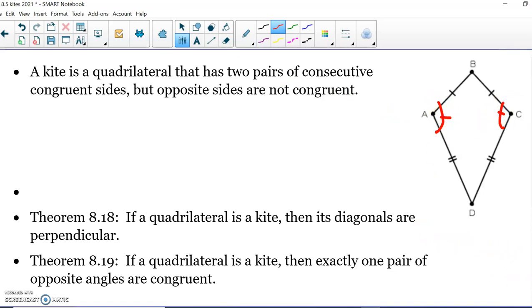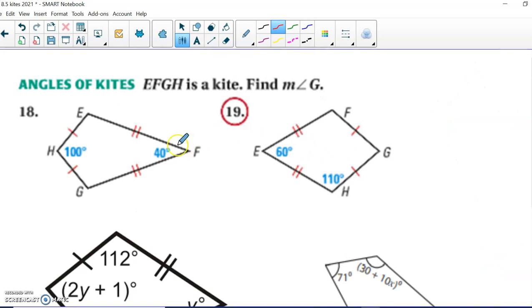Let's practice. All right. So we can see we have a kite, and we're given a 100-degree angle, a 40-degree angle. And again, if you can visualize folding this right down the middle, you can see angle E is going to be congruent to angle G.